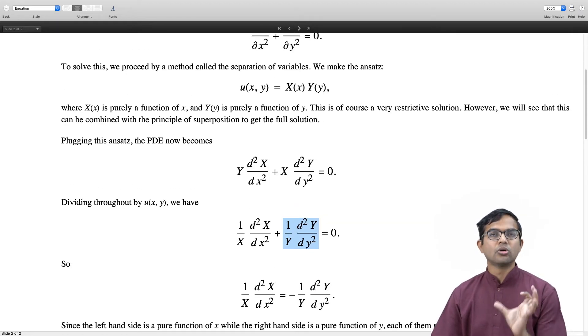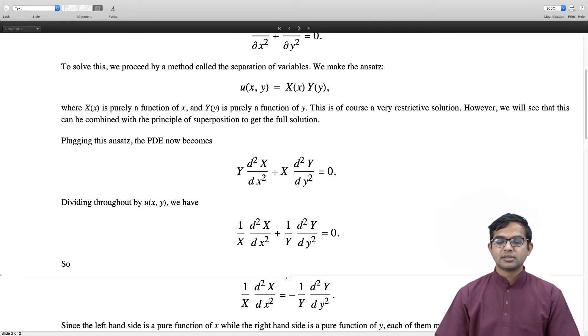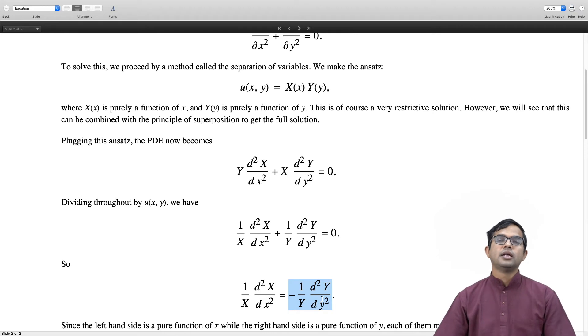This is the core of the separation of variables argument. We have managed to write this equation where there is only stuff which depends on x on the left hand side and only stuff which depends on y on the right hand side. The only way that f(x) = g(y), where x and y can take all real values, is if both functions are equal to a constant—the same constant.